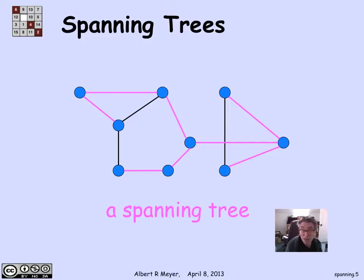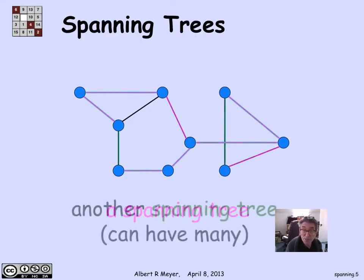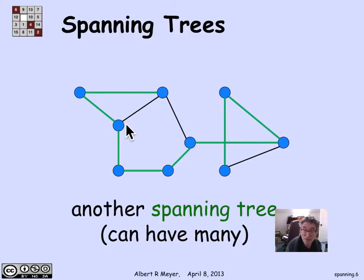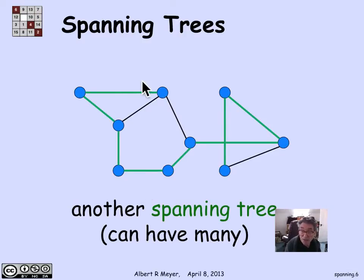This particular choice of spanning tree is kind of arbitrary. In general, there are lots of spanning trees. Here's another one, this time with green edges. I'm using only edges from the original graph — I've left out three different ones and used a different set of edges to form the tree. It has no cycles and it spans the graph because every vertex is part of it, and of course it's connected since it's a tree.